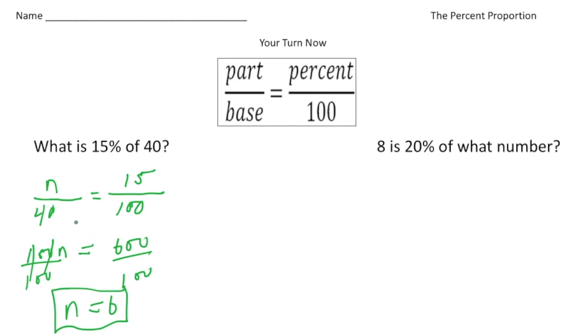The second one you had to do was 8 is 20% of what number? So again, I'm going to set up the proportion. The 100 always goes right here, and I know the percent is 20, so that goes above the 100.